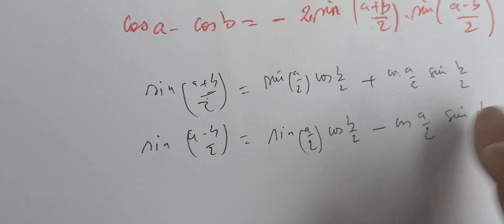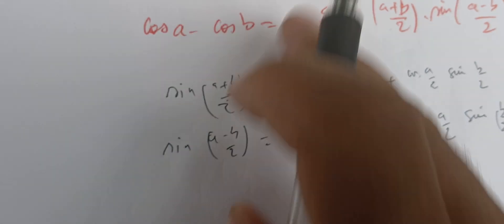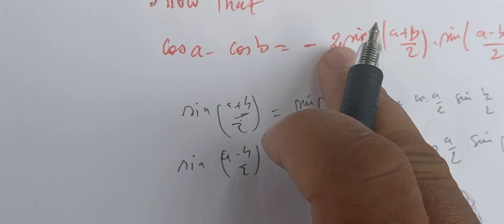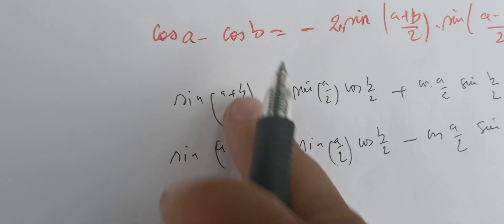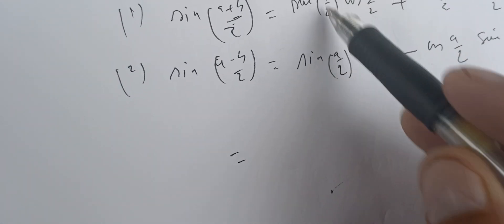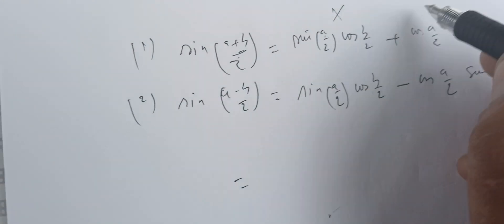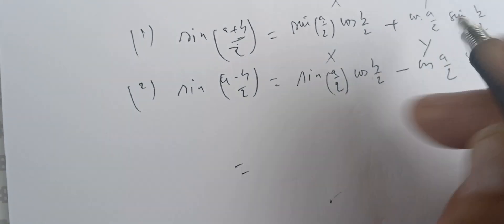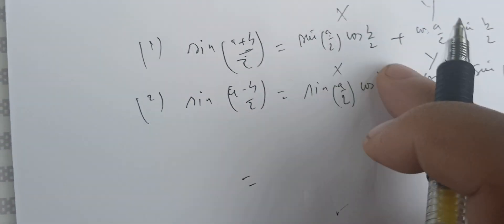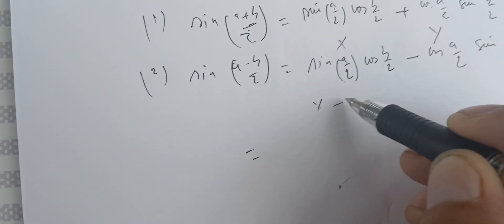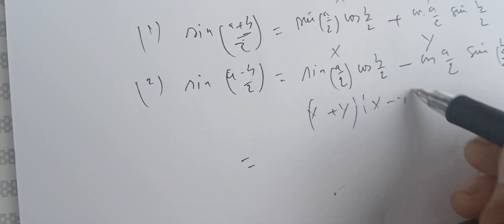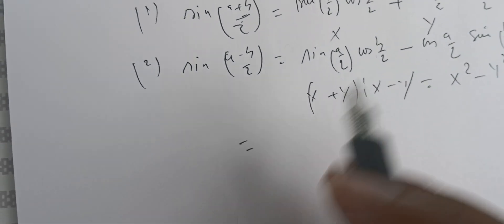We're going to multiply these two quantities, not forgetting the minus 2 factor. We can label x = sine(a/2)·cos(b/2) and y = cos(a/2)·sine(b/2), so we have (x+y)(x-y), which gives us x² minus y².